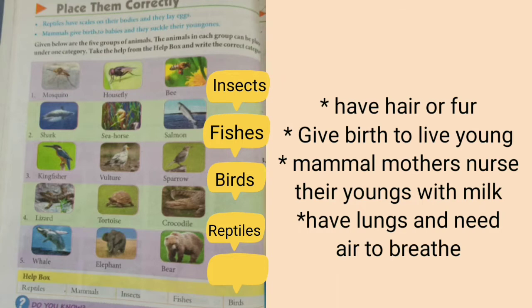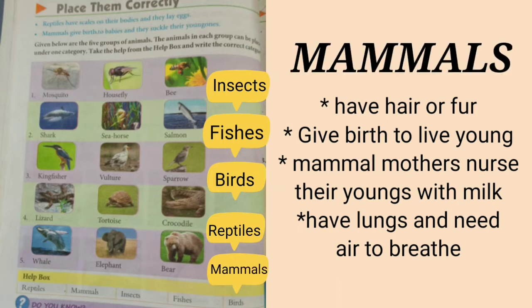The last group of animals shows whale, elephant and bear. These animals have hair or fur, give birth to live young, and mammal mothers nurse their young with milk. These have lungs and need air to breathe — these animals fall under the category of mammals.